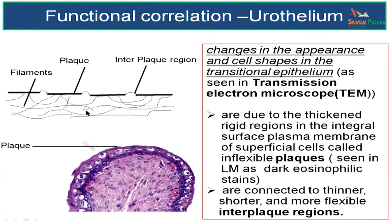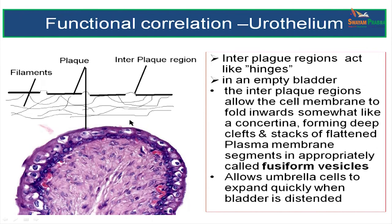In an empty bladder, the interplaque region allows the cell membrane to fold inwards like a concertina — they form stacks of flattened plasma membrane. This interplaque region acts as a hinge, and these stacks of plasma membrane in an empty bladder are sometimes called fusiform vesicles. This allows the umbrella cells to expand quickly when the bladder is distended.